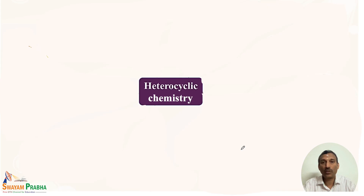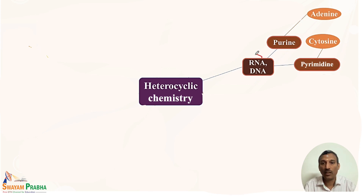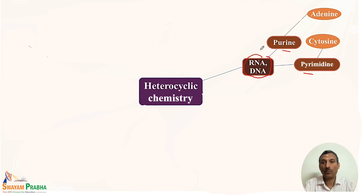Why is heterocyclic chemistry very important? The first and foremost reason is our DNA and RNA. In our body, DNA and RNA contain various bases — purines and pyrimidines. Some examples of purines are adenine and guanine; pyrimidines include cytosine, uracil, and thymine. So the DNA and RNA are made up of these heterocyclic compounds.